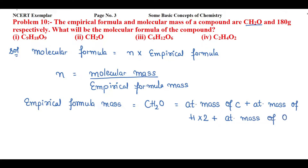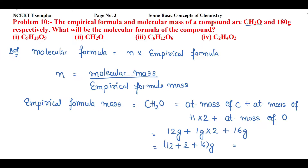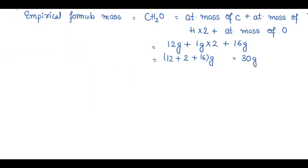Taking the atomic masses: carbon is 12g, hydrogen is 1g × 2, and oxygen is 16g. So 12 + 2 + 16 = 30 grams. Therefore, the empirical formula mass is 30 grams.